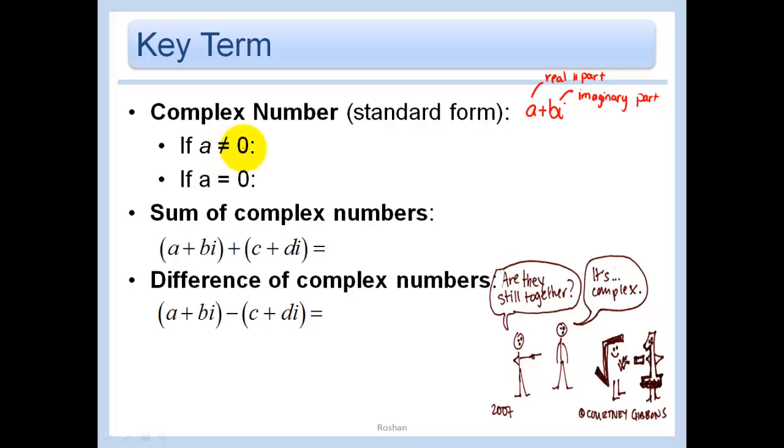If a does not equal 0, then we just have that a plus bi is a complex number in standard form. If a were equal to 0, then I would just be left with bi, and this would be a completely imaginary number. Or I guess I could call it a pure imaginary number because it's purely imaginary.